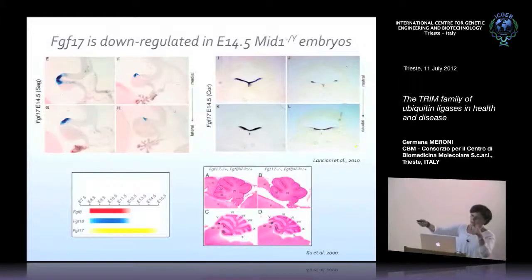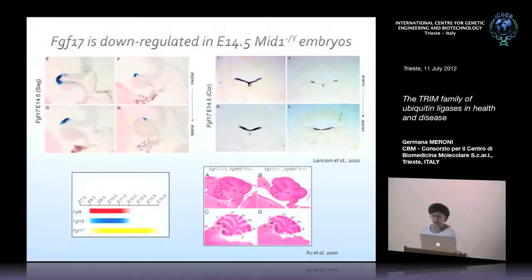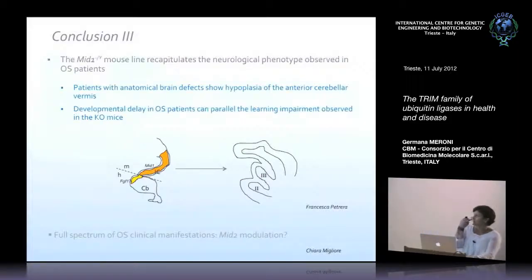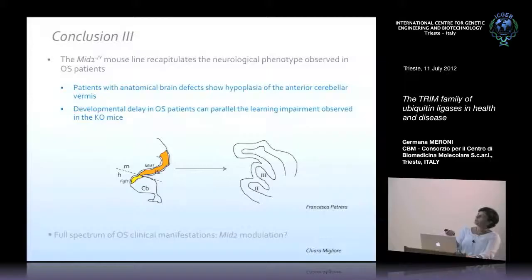This boundary shift corresponds to downregulation of FGF17, a member of the FGF8 subfamily involved in anterior-posterior boundary definition. Knockout of FGF17 is known to cause absence of the first lobe of the cerebellar vermis, consistent with our results. The MID1 knockout mouse line recapitulates the neurological aspects of Opitz syndrome, and indeed patients with anatomical brain defects always show hypoplasia of the anterior cerebellar vermis. The motor learning impairment in knockout mice parallels the developmental delay observed in Opitz syndrome patients.